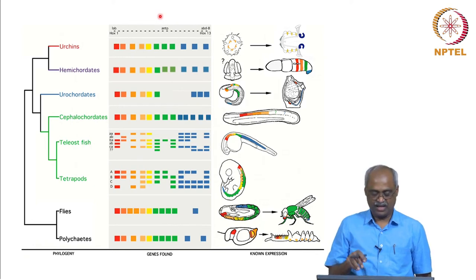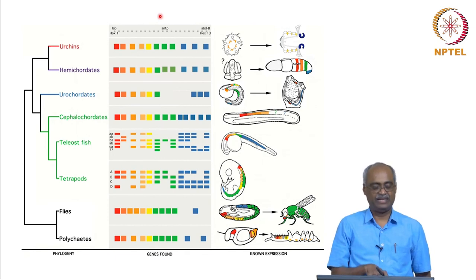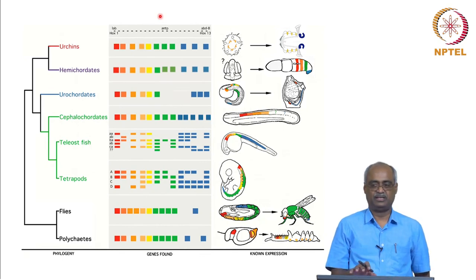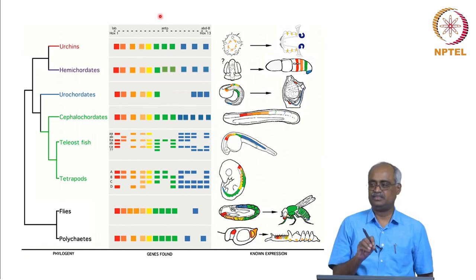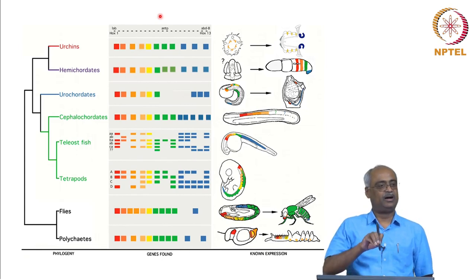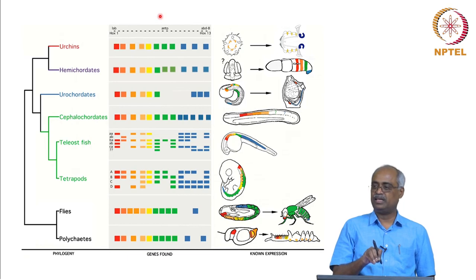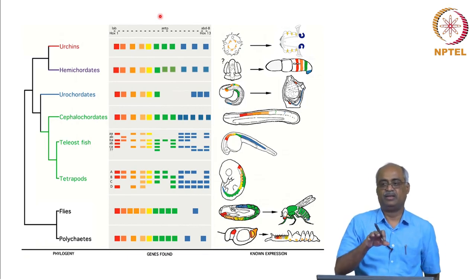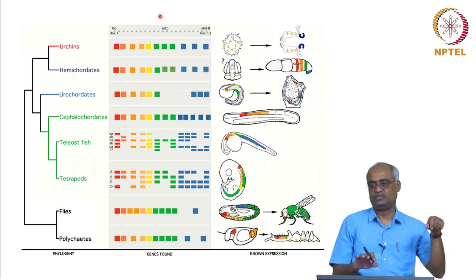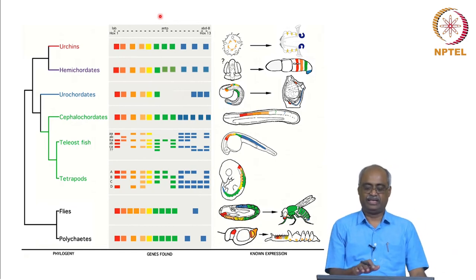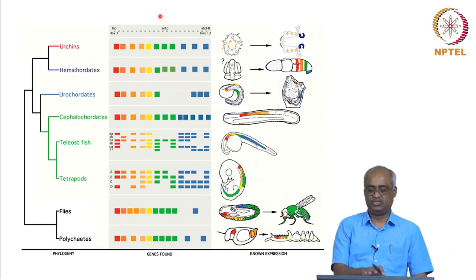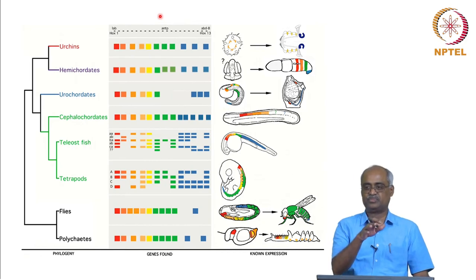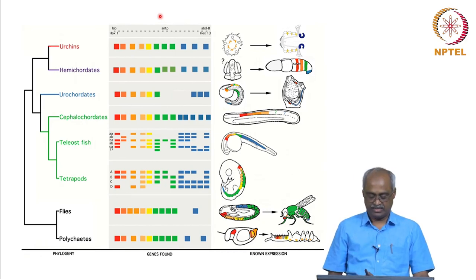We will stop here. In the next class we will complete how, at the stage when homeotic genes are expressed, each part of the embryo has a certain set of transcription factors at certain concentrations, making each region unique with a specified fate. We will also look at what the homeotic genes do as master regulators — those two aspects will be completed in the next class.